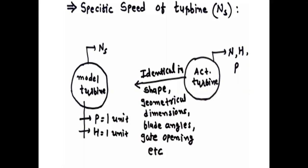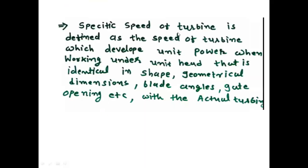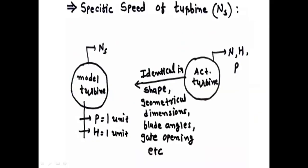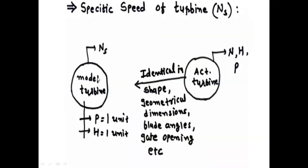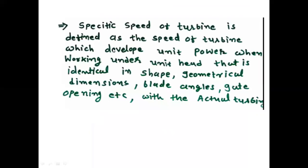The specific speed of turbine is defined as the speed of a turbine which develops unit power when working under a unit head, and which is identical in geometrical dimensions — such as blade angle, gate opening, etc. — with the actual turbine. The speed of this design model turbine is considered as the specific speed of turbine.